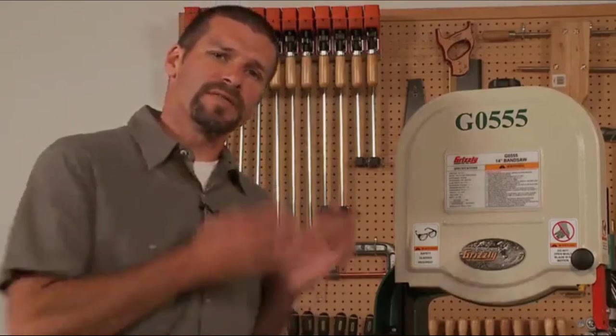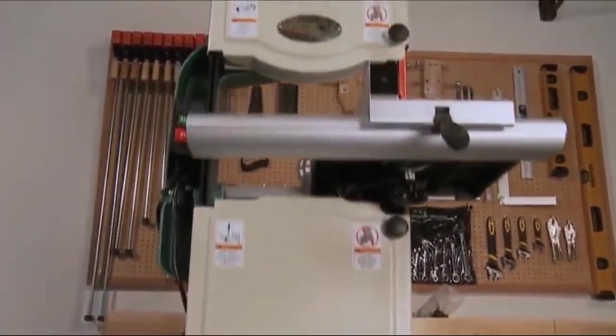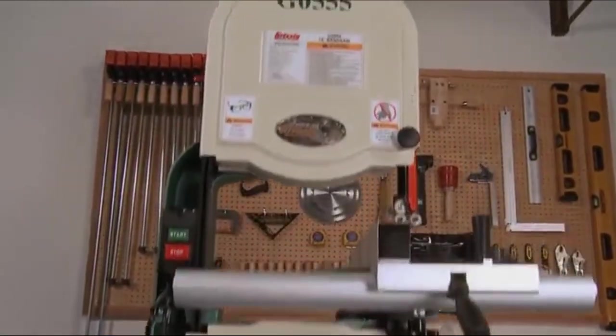The body of the saw is made of solid cast iron and a stand made of heavy gauge steel. This helps dampen vibration. Watch how smoothly the saw is when I turn it on.